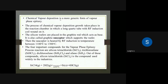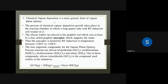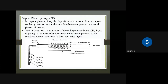Chemical vapor deposition (CVD) is a generic form of vapor phase epitaxy. Vapor phase epitaxy produces a single crystalline form, while CVD does not necessarily. CVD is the generic case and vapor phase epitaxy is the special case.